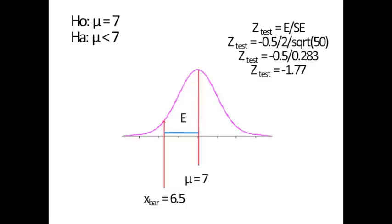In the problem I suggested, the standard deviation is 2, and there are 50 in the sample. So Z test equals E over SE. Our effect size is negative 0.5. Our standard error is for the X bar distribution, which is always S divided by the square root of N. So our S was 2 divided by the square root of 50. Our Z test calculates to be negative 0.5 divided by 0.283, so our Z test statistic turned out to be negative 1.77.